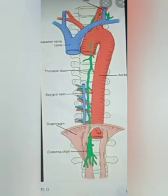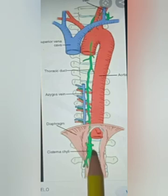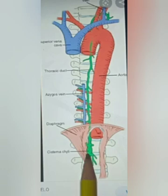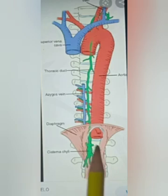The next topic is cisterna chyli, from the chapter posterior abdominal wall. Cisterna chyli is an elongated lymphatic sac, about 5 to 7 cm long. It is present in front of the first and second lumbar vertebrae, with those vertebrae behind it, and it lies to the right of the abdominal aorta.